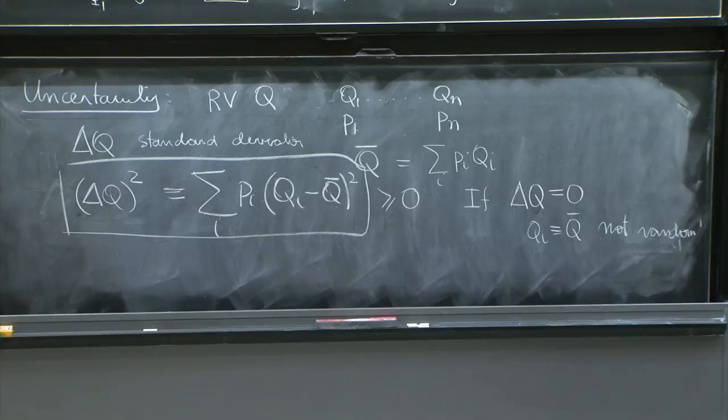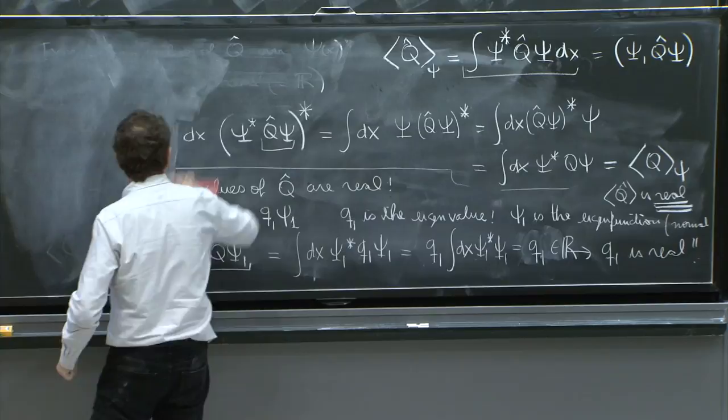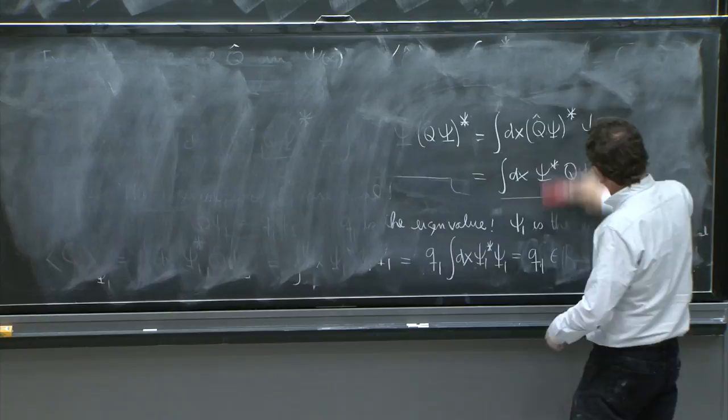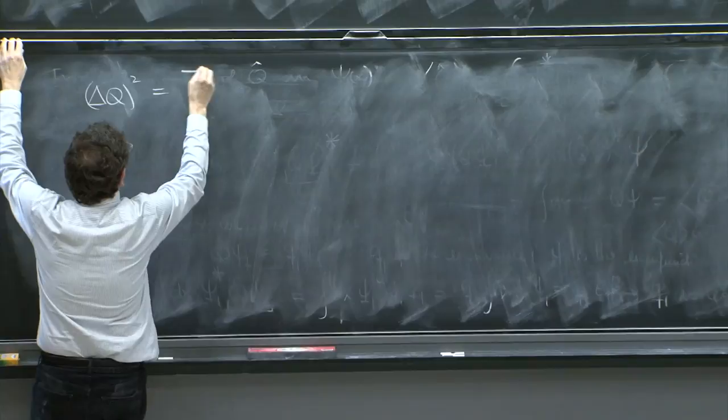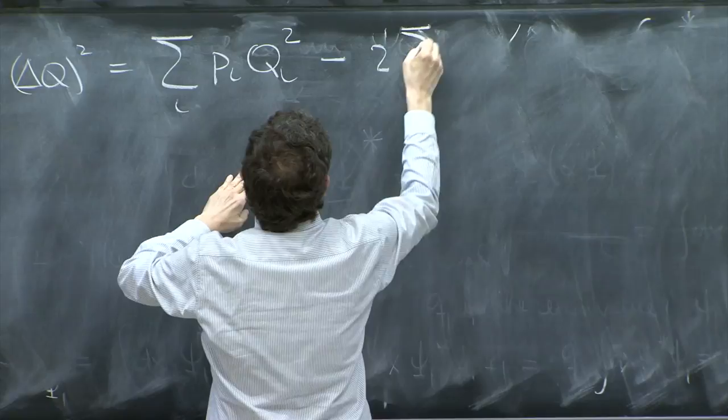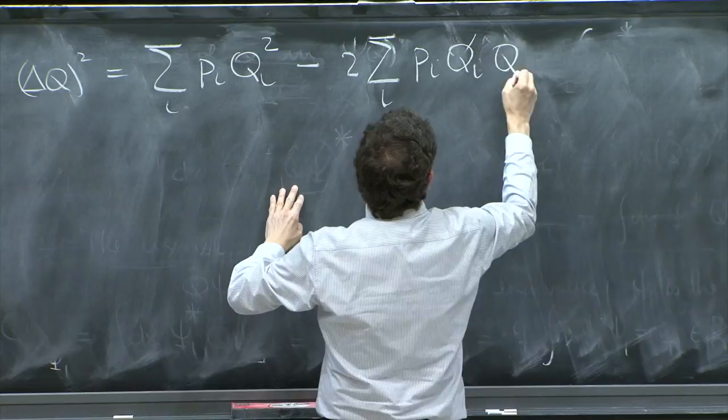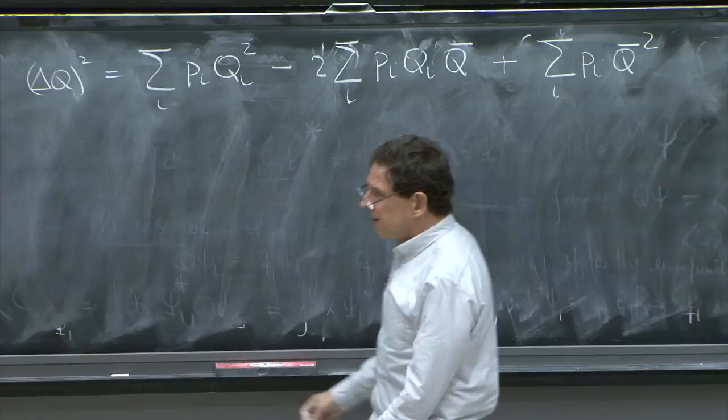OK. Now we can simplify this expression. And you do the following. By simplifying I mean expand the right-hand side. So sum over i pi qi squared minus 2 sum over i pi qi q bar plus sum over i pi q bar squared.